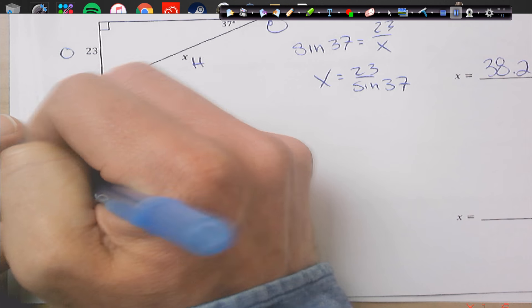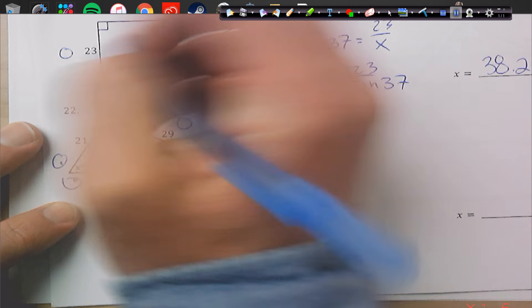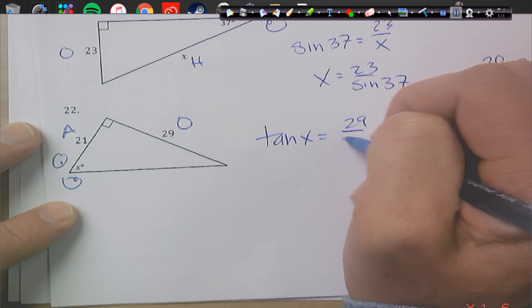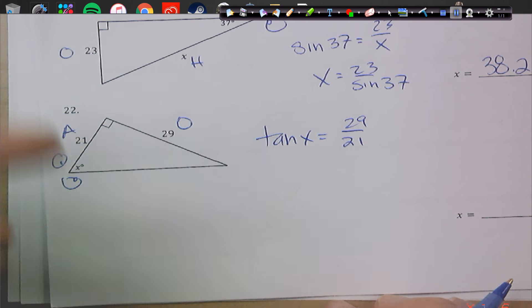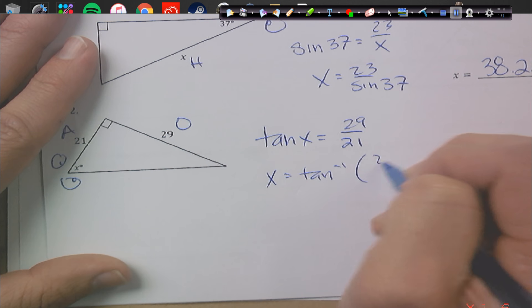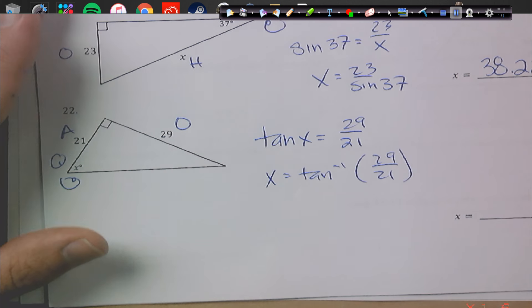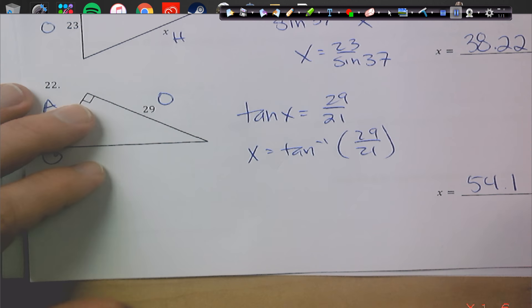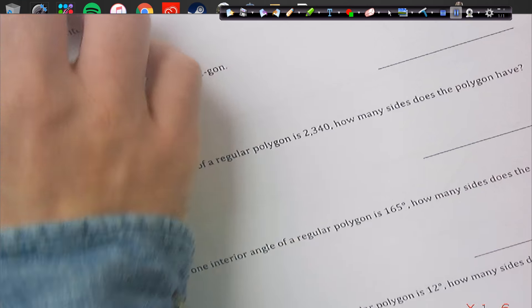Google eyes on the prize. We have opposite and adjacent. So, we're going to use the tangent of x equals opposite over adjacent. To get rid of the tan, I have to take the inverse tan. So, I'm going to take the inverse tan of 29 over 21. And we get 54.1, to be more precise.